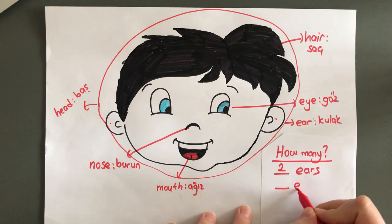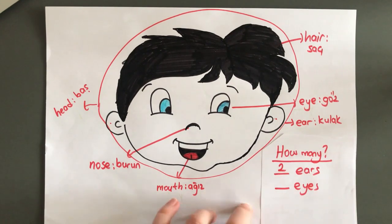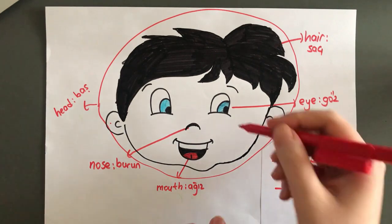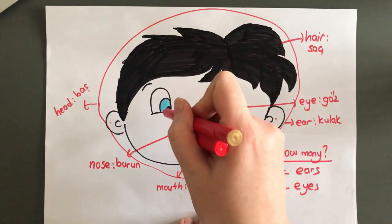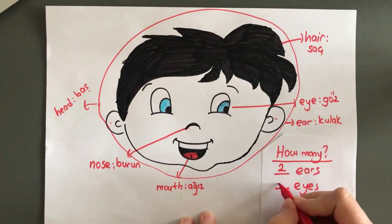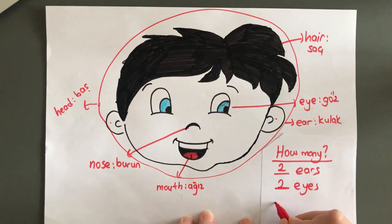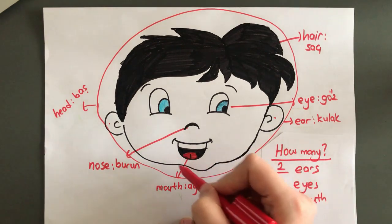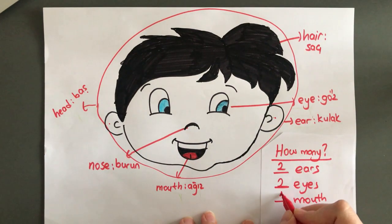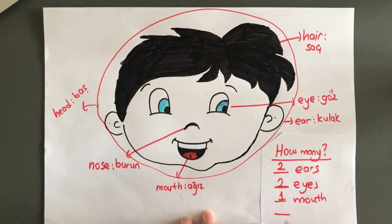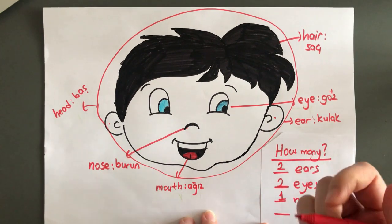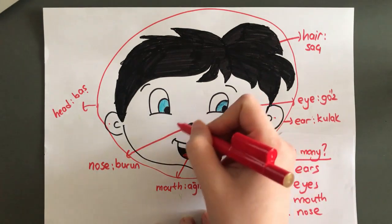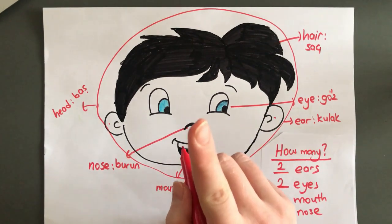How many eyes? One, two. Two eyes. How many mouths? Only one mouth. One. How many nose? Let's count. One. Only one nose.